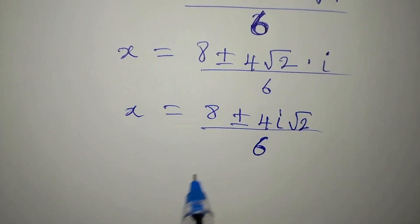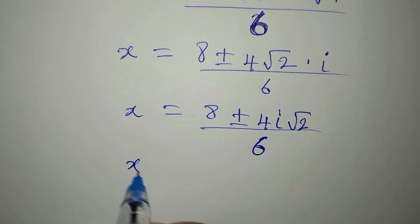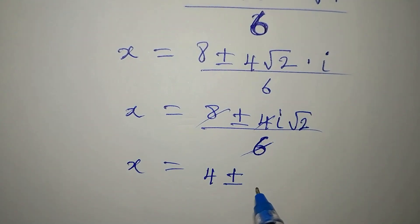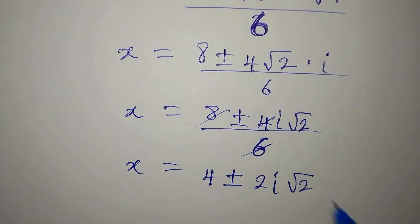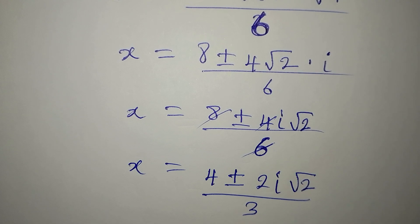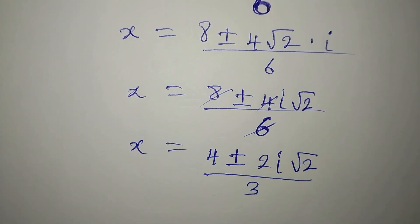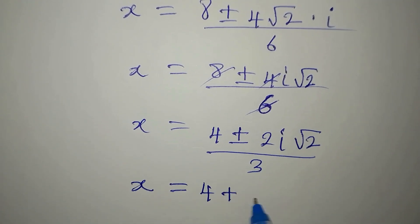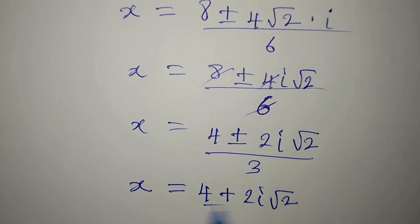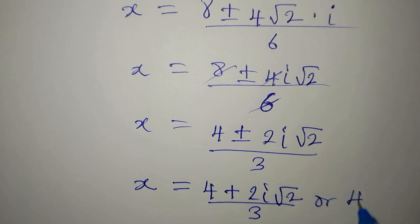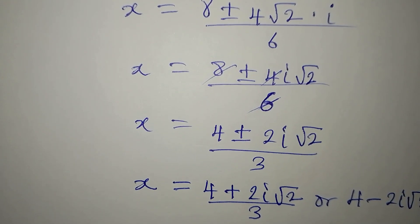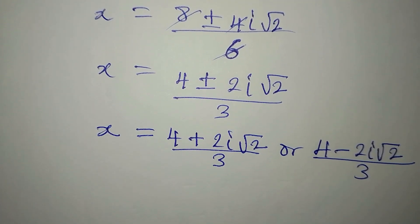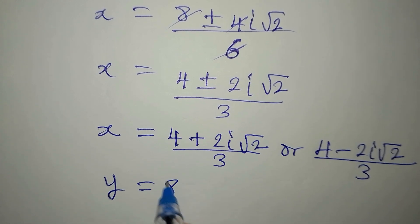We can simplify by dividing through by 2, giving x equals 4 plus or minus 2i root 2, all divided by 3. So x equals (4 plus 2i root 2) over 3, or x equals (4 minus 2i root 2) over 3. Now we go back to equation 3, which is y equals 8 minus 3x.